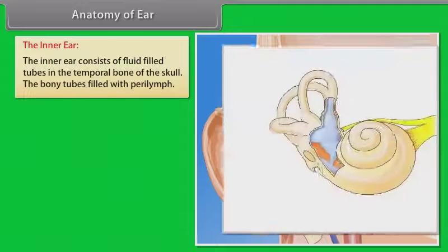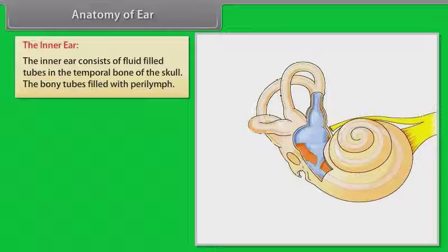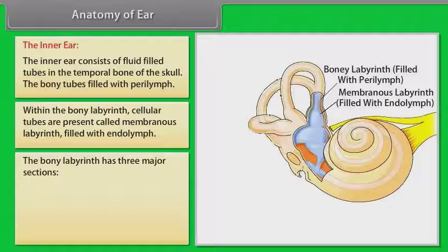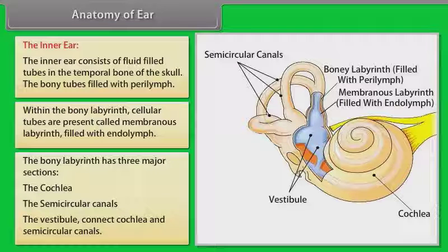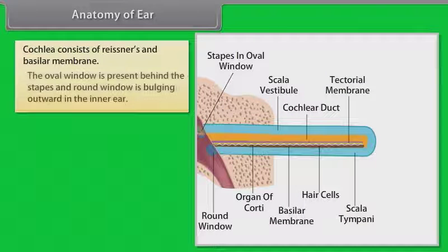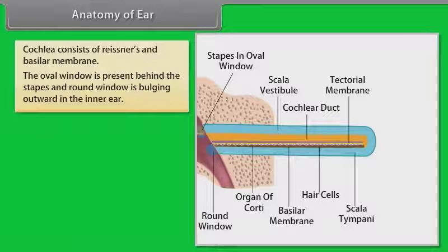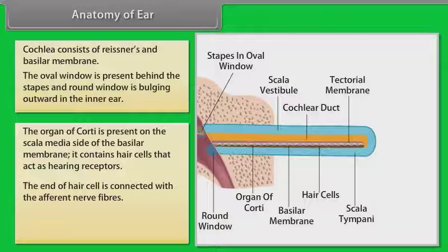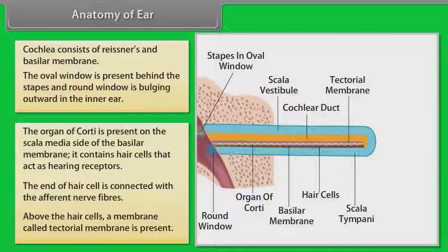The inner ear consists of fluid-filled tubes in the temporal bone of the skull. The bony tubes are filled with perilymph within the bony labyrinth, and cellular tubes called the membranous labyrinth are filled with endolymph. The bony labyrinth has three major sections: the cochlea, the semicircular canals and the vestibule. Cochlea consists of the reissner's and basilar membrane. The oval window is present behind the stapes and the round window bulges outwards in the inner ear. The organ of Corti is present on the scala media side of the basilar membrane and contains hair cells that act as hearing receptors. The end of each hair cell is connected with afferent nerve fibers, and above the hair cells a membrane called the tectorial membrane is present.